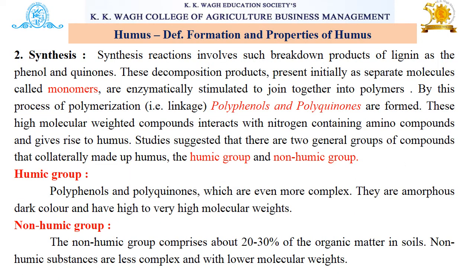The second step of humus formation is synthesis. Synthesis reactions involve such breakdown products of lignin as phenol and phenols. These decomposition products, present initially as separate molecules called monomers, are enzymatically stimulated to join together into polymers. By this process of polymerization — a linkage process — polyphenols and polyphenols are formed. These high molecular weight compounds interact with nitrogen-containing amino compounds and give rise to humus.